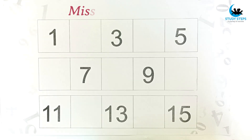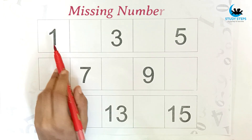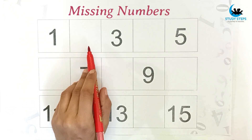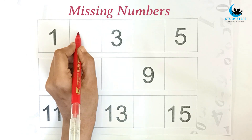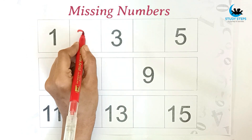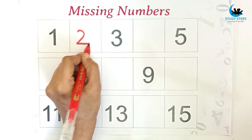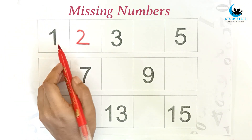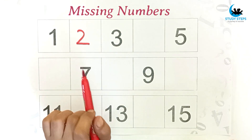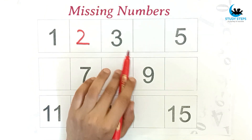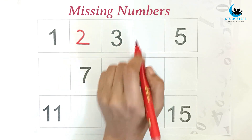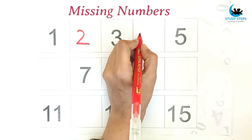Hello kids, today I am going to teach you missing numbers. So let's start. One — which number comes after one? Two. One, two, three — which number comes after three? Four.